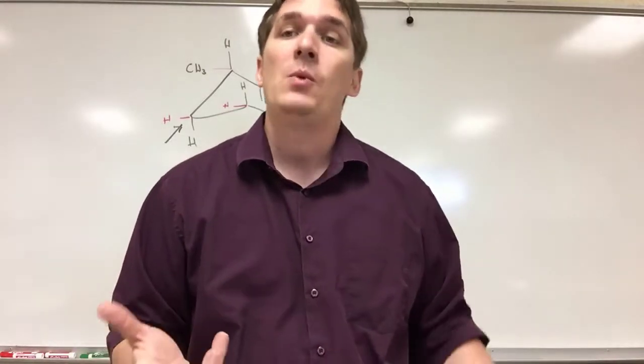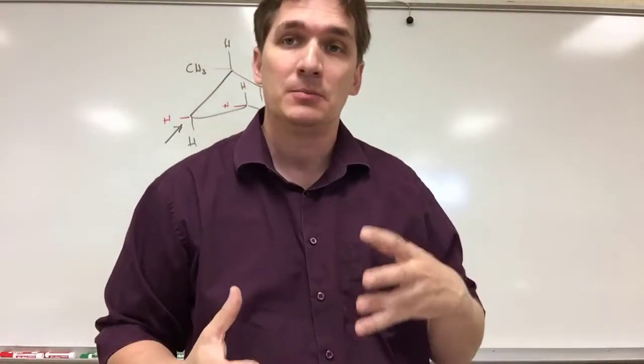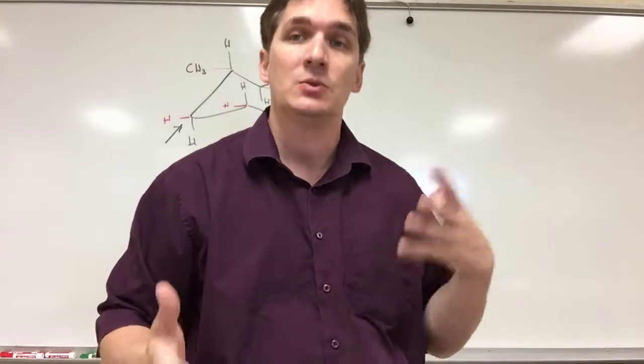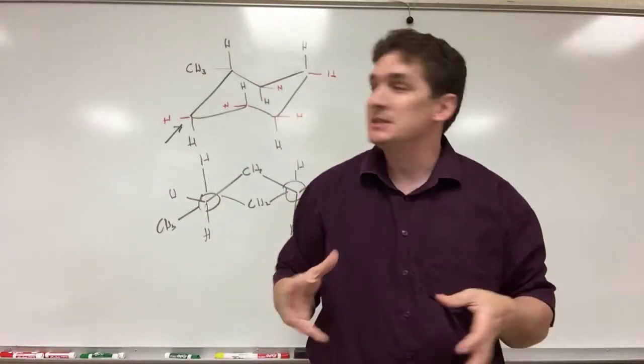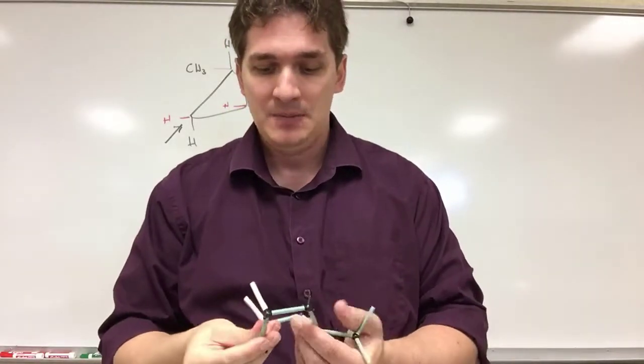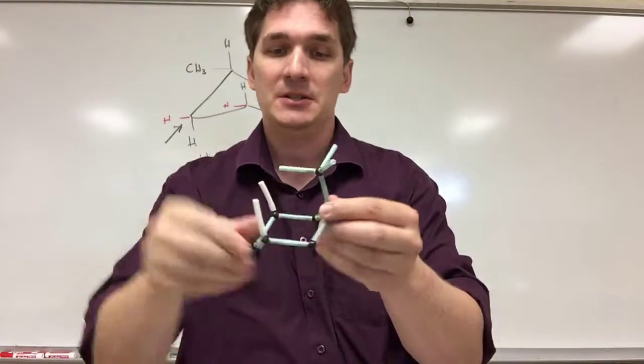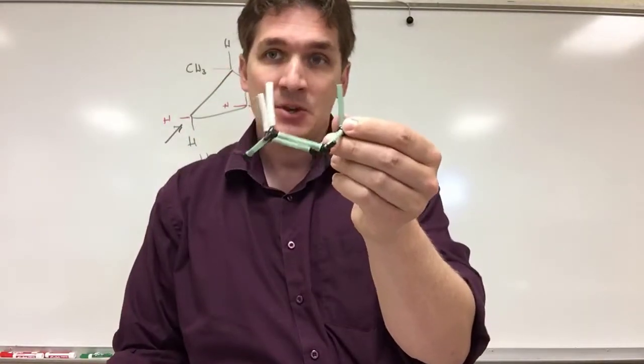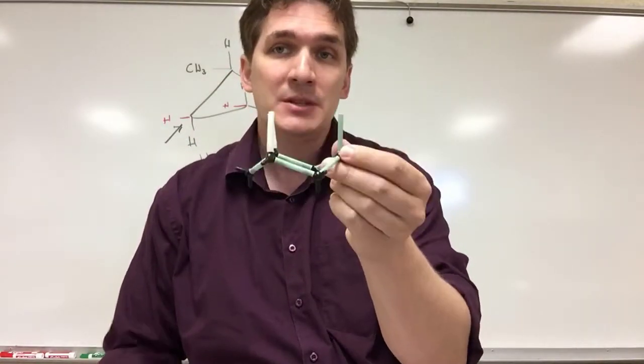So in general, what we want to see is we want to put our bulkier groups along the equatorial positions. The reason for this is that there is a lot of strain sitting above that ring above and below. Again, if we pop these back into their respective positions, all these axial atoms are close to each other. So the smaller ones need to be on top.